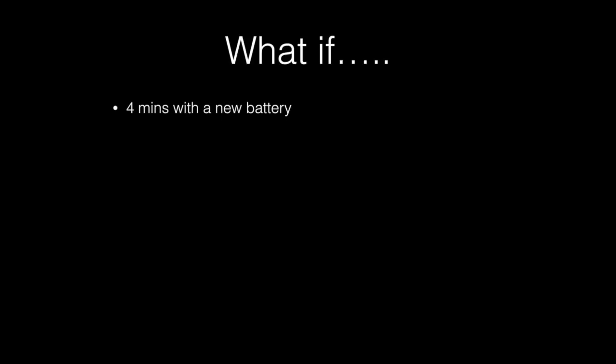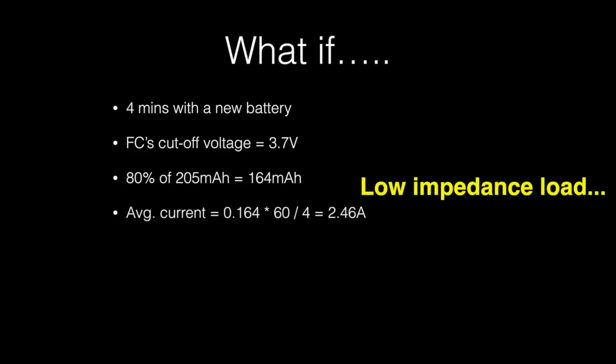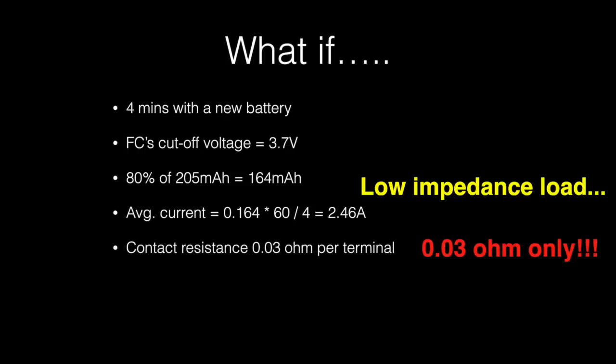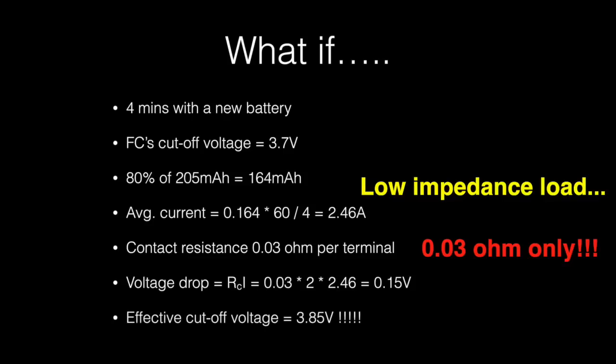Suppose we have four minutes flight time with a new battery and the FC cutoff voltage is 3.7 volts. At 3.7 volts the battery is roughly 80% discharged and we're talking about 164 milliamp hours here. The average current drawn by the drone is about 2.46 amps. Now assume the contact resistance per terminal is 0.03 ohms. The voltage drop is as much as 0.15 volts and the effective cutoff voltage is 3.85. So I'm guessing we all see the problem here.